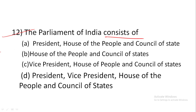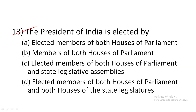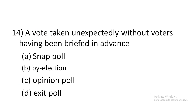Question 12: The Parliament of India consists of — answer is C, the Vice President, House of the People, and Council of States. Question 13: The President of India is elected by — answer is D, elected members of both houses of Parliament and both houses of state legislatures.